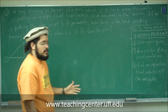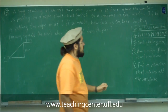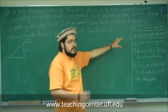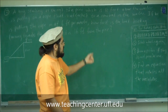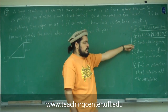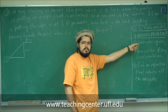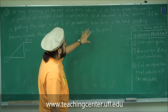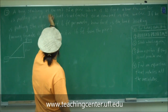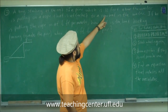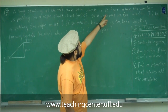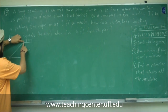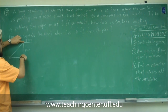Okay, so tips for related rates problems. Number 1: re-read the problem. Always re-read it until you finally understand what's going on. Then state what is given — pretty much just write 'given.' For example, they're telling you that the pier is 12 feet above the water, so he's standing here and this distance is 12 feet.